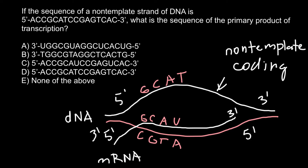Now let's analyze our problem one more time. If the sequence of the non-template strand of the DNA is as given, what is the sequence of the primary product of transcription? The primary product of transcription would be messenger RNA. As you know, the sequence on the messenger RNA would be the same as on the non-template coding strand of the DNA, with only the exception that thymine is substituted with uracil. So we are looking for the same sequence at the same positions, but every thymine is substituted with uracil. The answer is: 5' — A C C G C A U C C G A G U C A C.